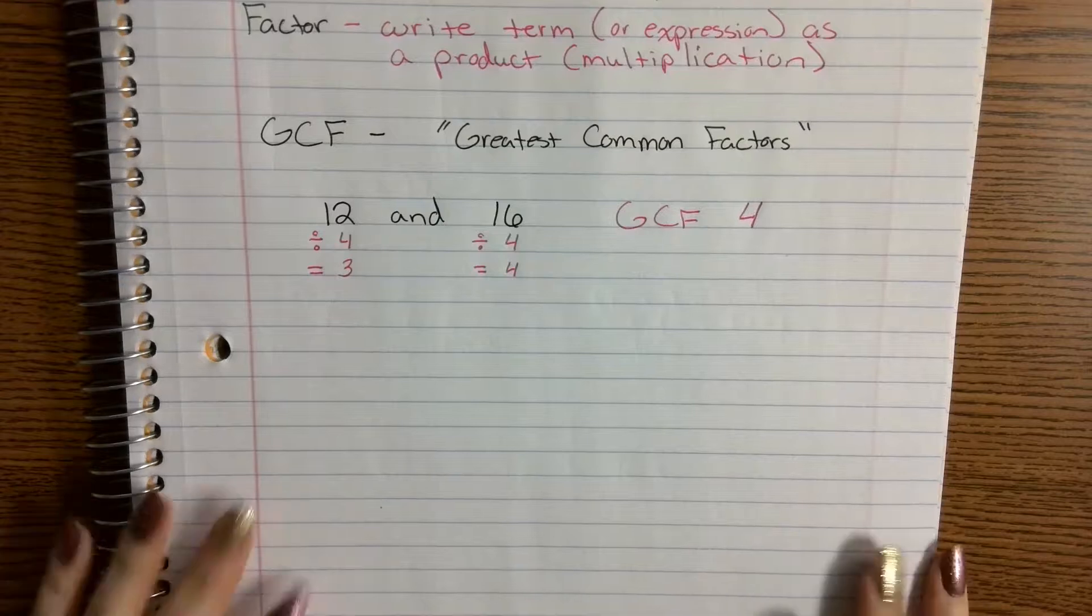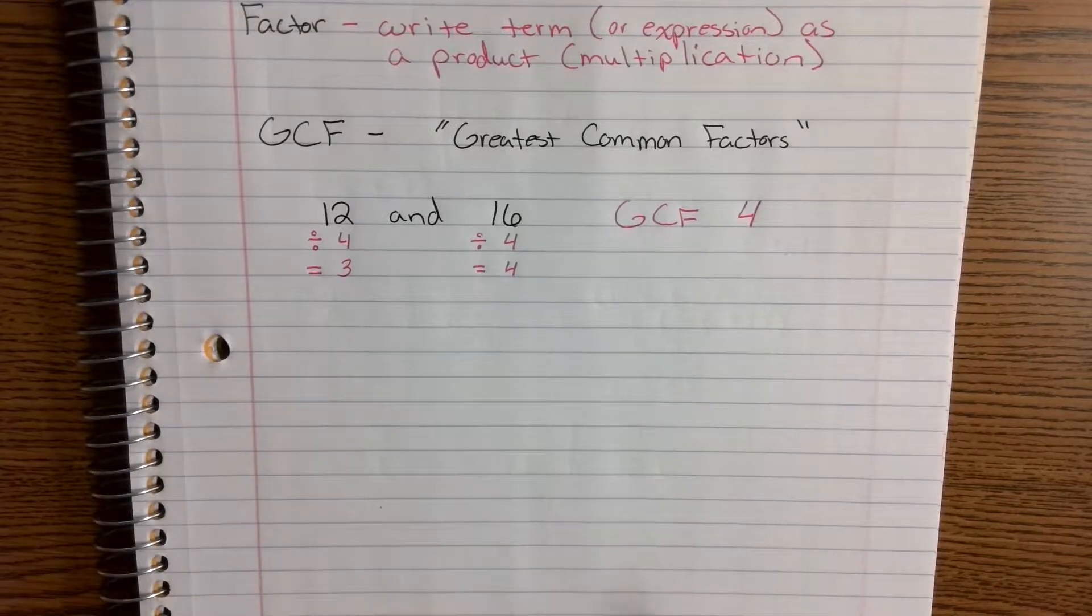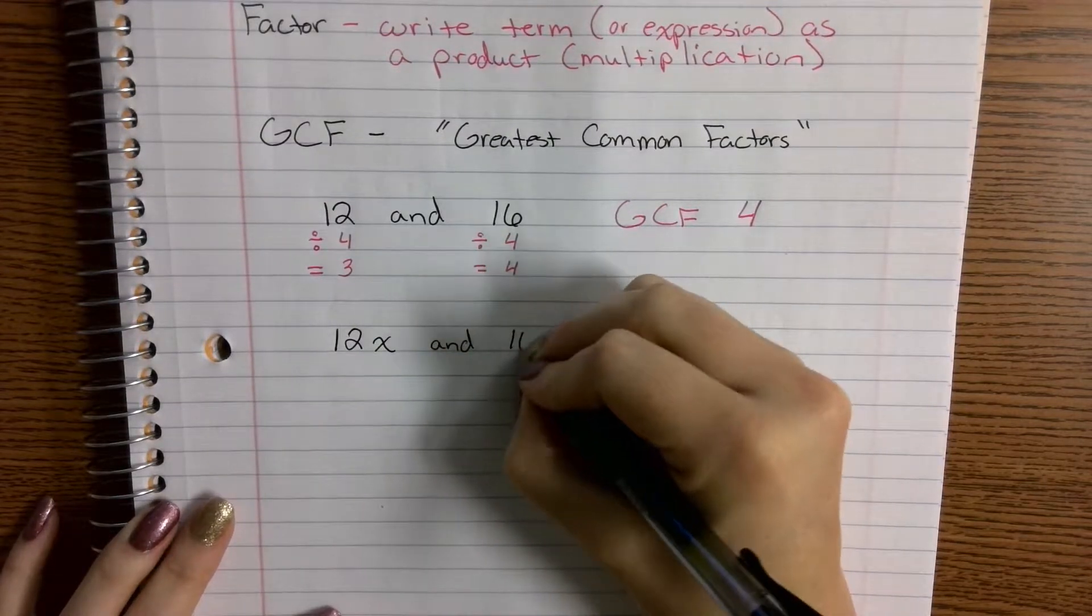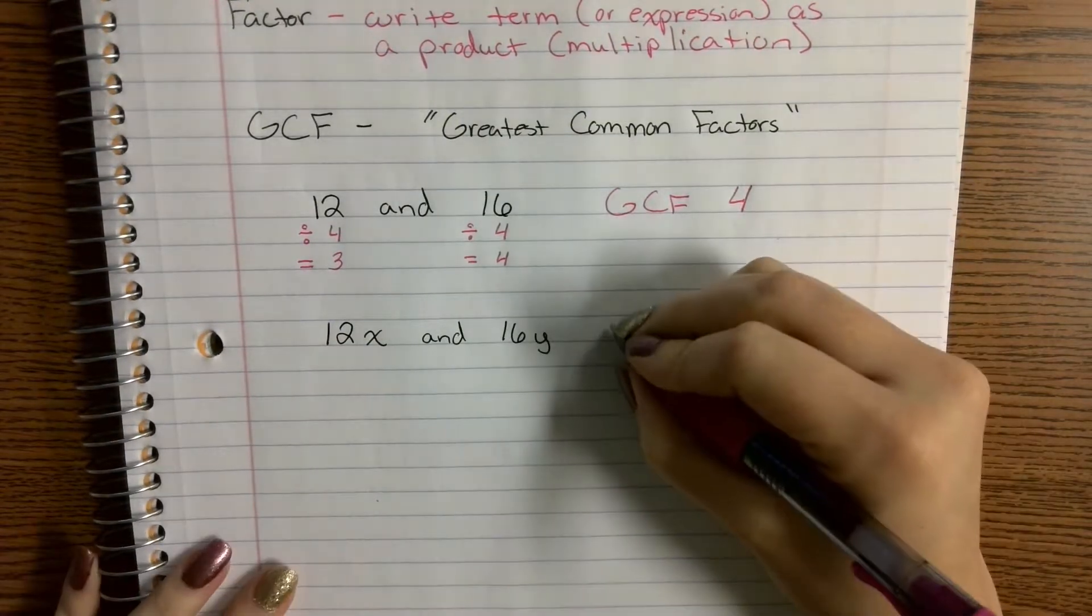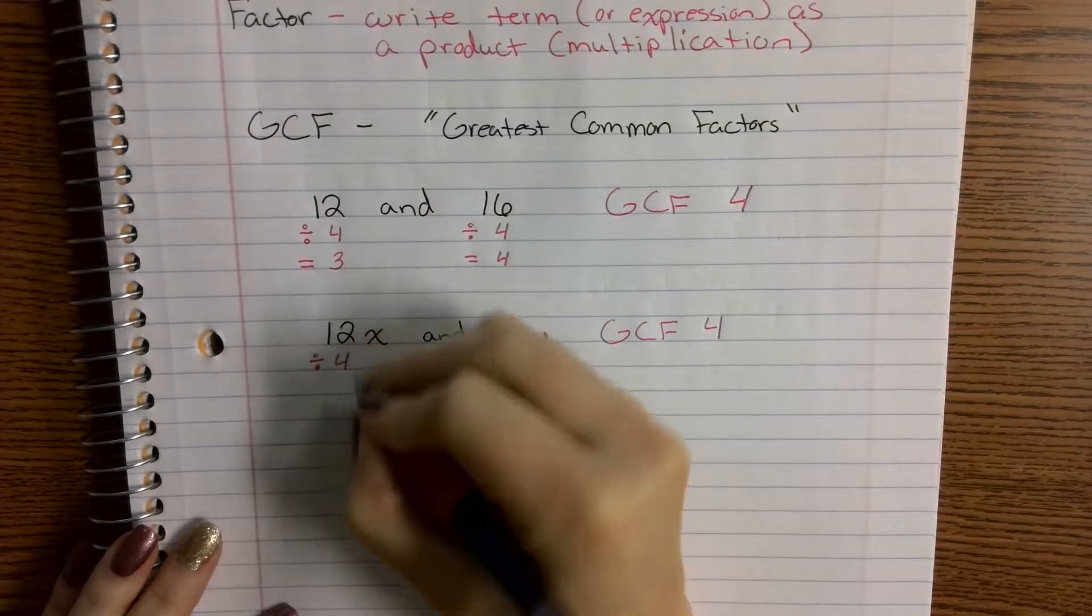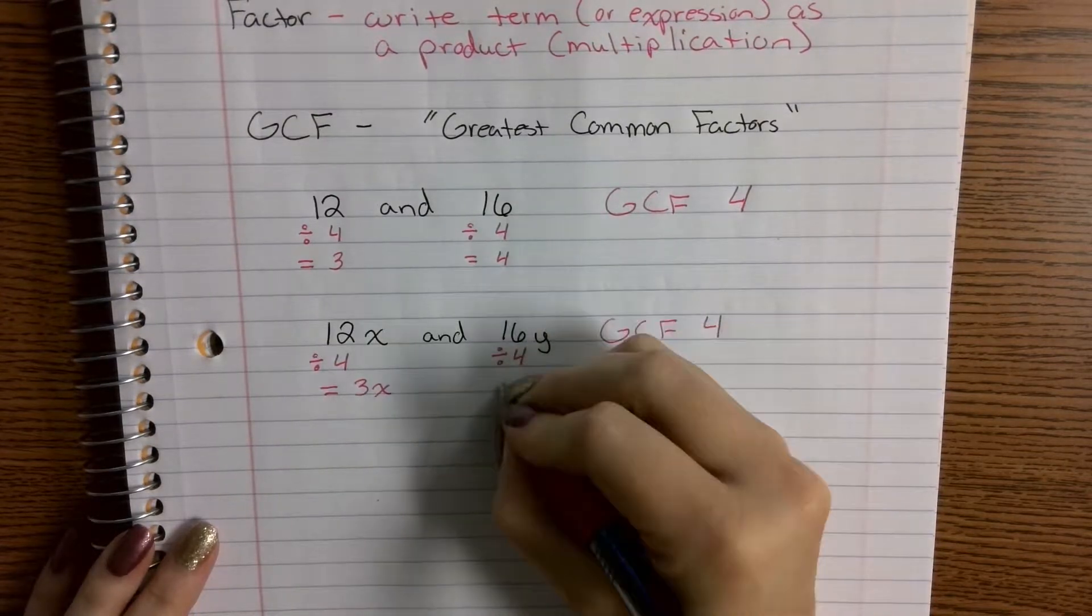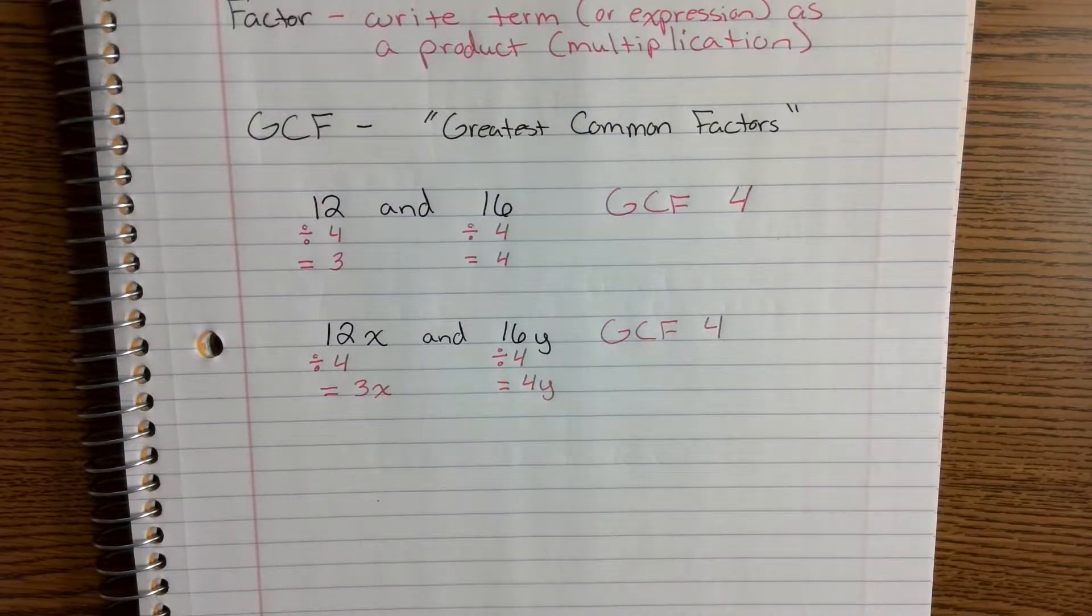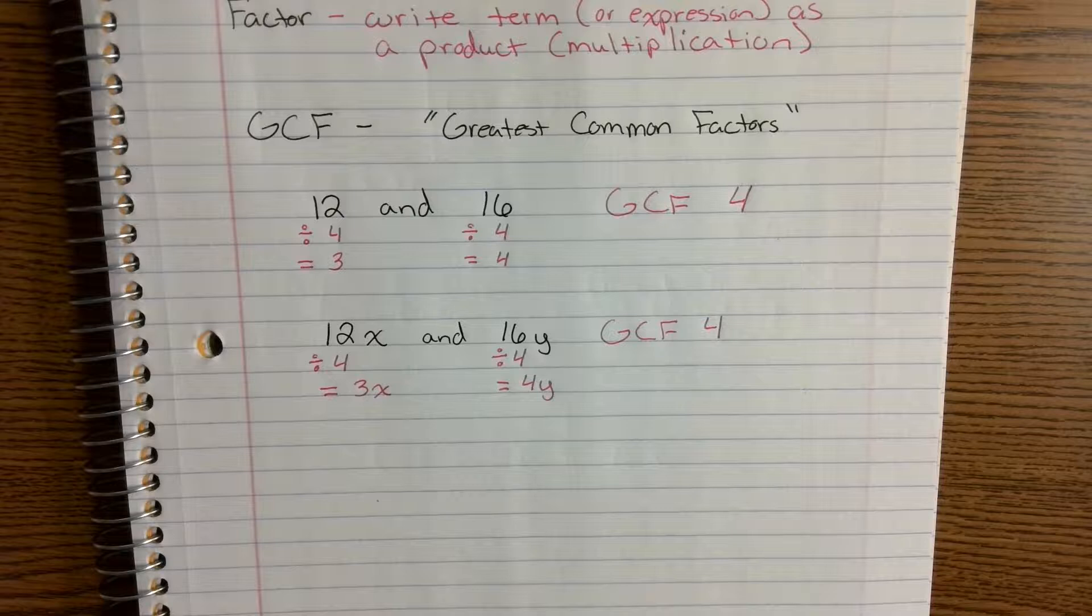You know that the greatest common factor is four. Yeah, you guys did this a long time ago. You did this when you were first starting to learn about fractions even. We're going to take that concept, that idea, and apply it now with variables. So if I said you had 12X and 16Y, it's still the same idea. Now with this concept, we actually have a neat little trick that utilizes the calculator.